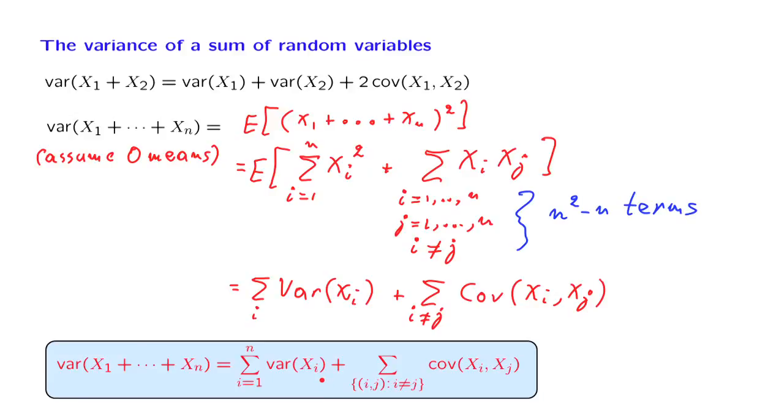For the general case where we may have dependencies and non-zero covariances, then the variance of the sum involves also all the possible covariances between the different random variables.